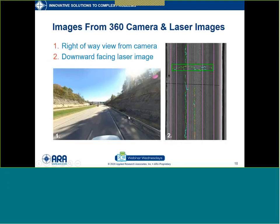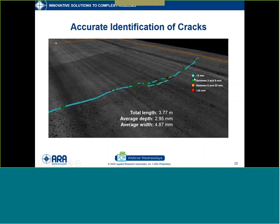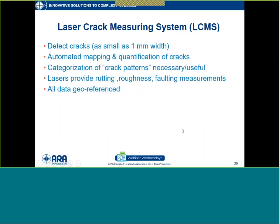The 360-degree camera data can be processed so you're looking in any direction — in this case, straight forward. The laser-generated image looking straight down shows cracking. The laser crack measuring system is very good at identifying minute cracks, even down to one millimeter in size. This example has three different codes — red, yellow, green — based on the thickness of the crack, giving it low, medium, or high severity. So it's very good at distinguishing cracks you might not even see with the naked eye, and you can use software in an automated way to quantify cracks. However, it does not recognize crack patterns like alligator cracking. A lot of people are working hard on algorithms to get there, so it requires some manual intervention.